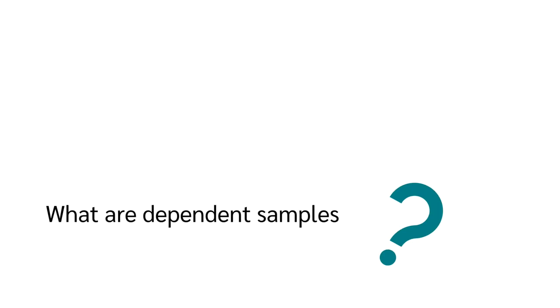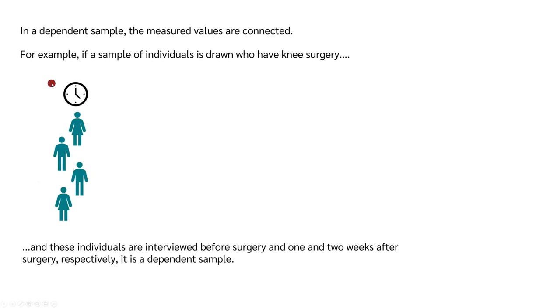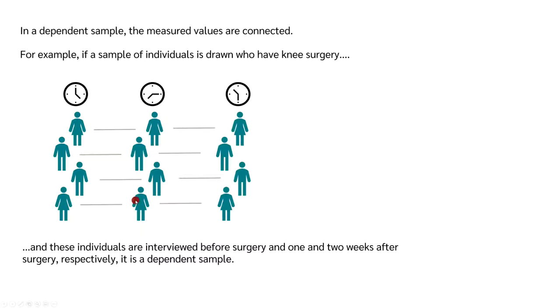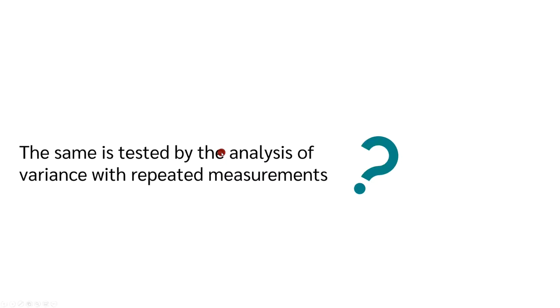What is a dependent sample? In a dependent sample, the measured values are linked. For example, if a sample is drawn of people who have knee surgery and these people are interviewed before the surgery and one and two weeks after the surgery, it is a dependent sample — because the same person was interviewed at multiple time points.